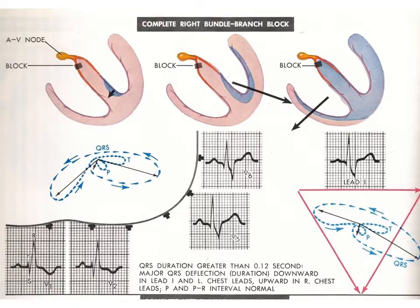In complete right bundle branch block, the wave travels down the left side first. On the ECG you can see two R waves — an M pattern in lead V1 and a W pattern in leads V5 and V6. So that's complete right bundle branch block.